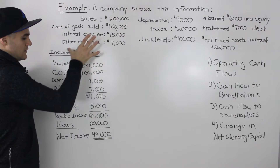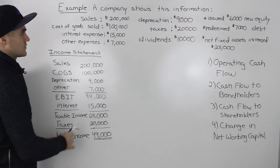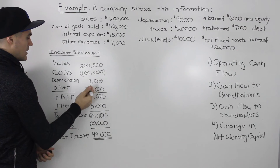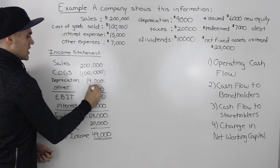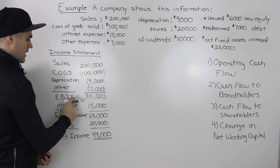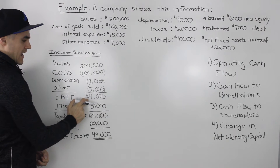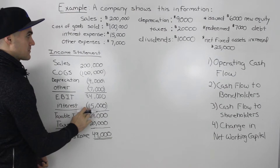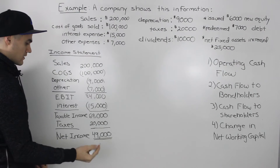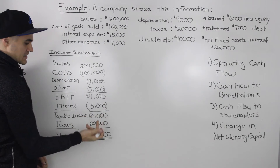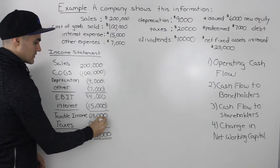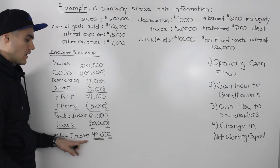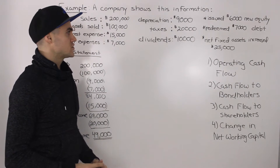Taking this information and creating the income statement: we had our sales of $200,000, then we subtract our cost of goods sold of $100,000, then we subtract depreciation and the other expenses, and we get earnings before interest and taxes of $84,000. Then from that, we subtract our interest expense of $15,000 to get our taxable income of $69,000.